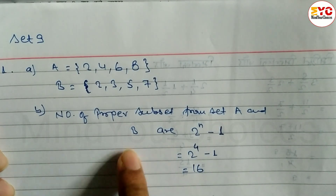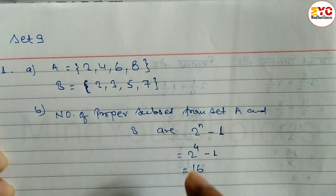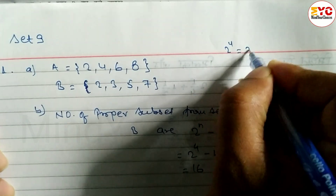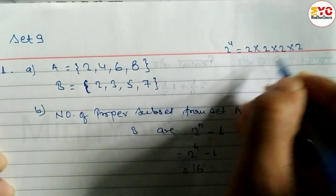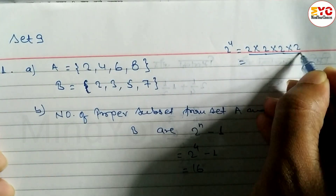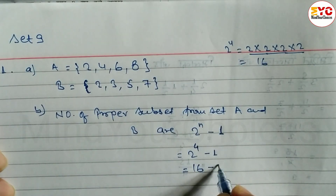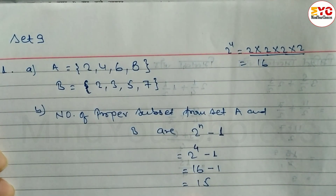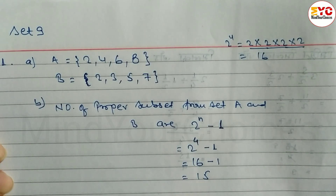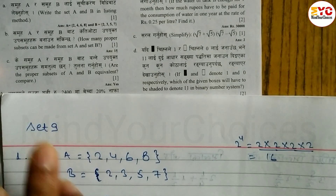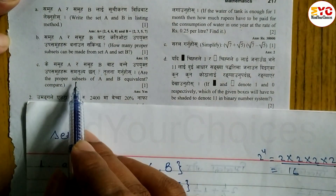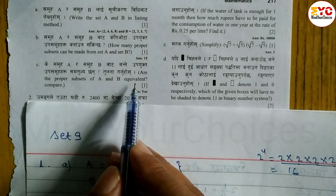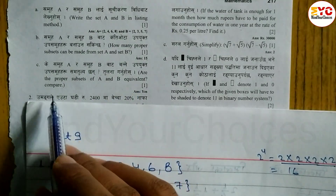2 power 4 is how much? 2 into 2 into 2 into 2 equals 16. So 16 minus 1 equals 15. We can make 15 proper subsets. For question C: are the proper subsets of A and B equal? Yes, they are equal because the number of elements in set A and set B are the same — both have 4 elements.